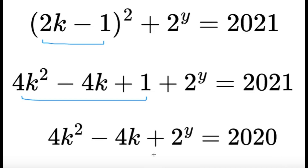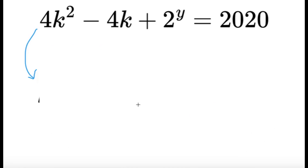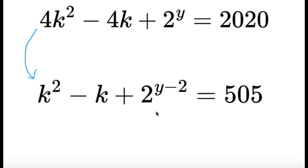Now we can check everything again. Take note that 4k² and 4k are both divisible by 4, and 2020 is also divisible by 4. So to make this equation true, 2 raised to y must also be divisible by 4, which means y must be greater than or equal to 2. Dividing both sides by 4, we get k² − k + 2 raised to (y − 2) equals 505.